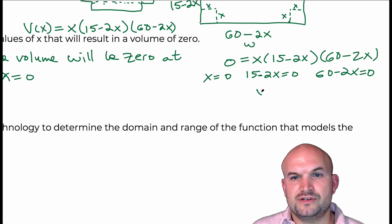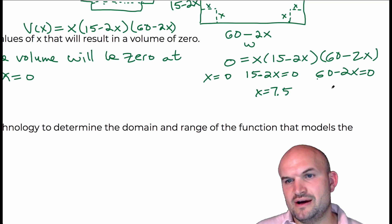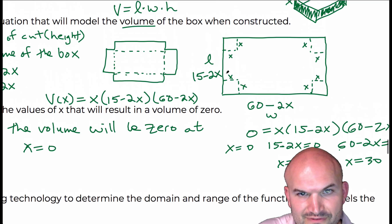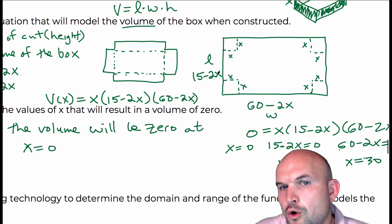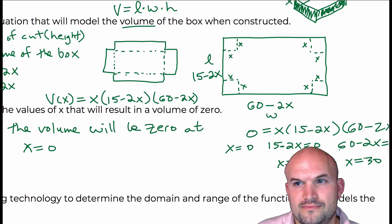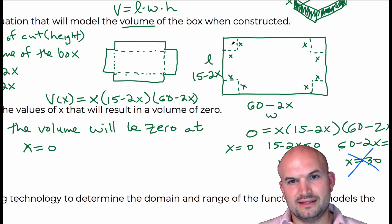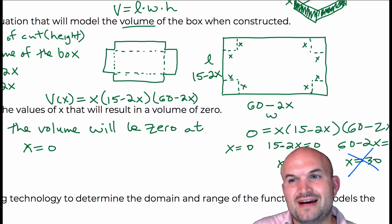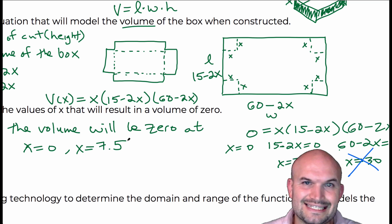We don't keep x = 30 because the length of the cardboard is only 15 inches — it doesn't make sense to make a cut of 30 inches. x = 7.5 makes sense because 7.5 + 7.5 = 15, meaning you'd use the entire width with no cardboard remaining — the volume becomes zero. So volume is zero at x = 0 and x = 7.5.